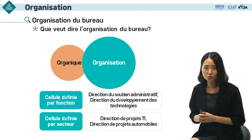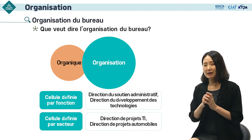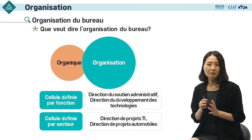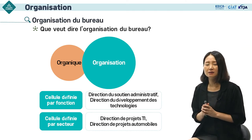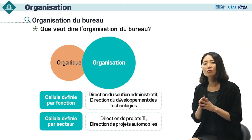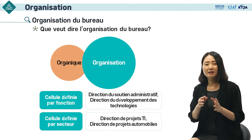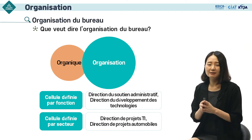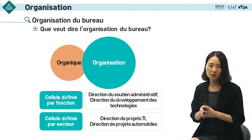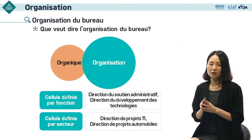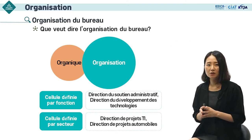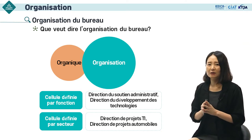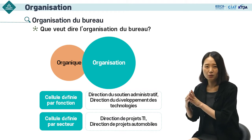Ce bureau d'équipe est classifié en deux catégories : les cellules définies par fonction et celles définies par secteur. Les cellules définies par fonction pratiquent littéralement une fonction — par exemple, la direction du soutien administratif et la direction du développement. Les cellules définies par secteur reflètent les caractéristiques des industries et sont nommées direction de projet TIC, automobile ou écran.